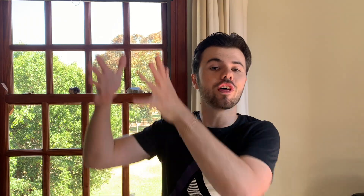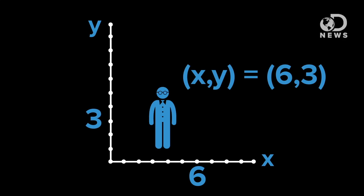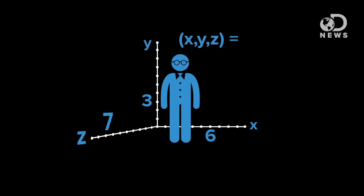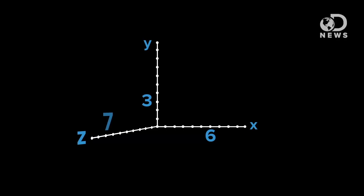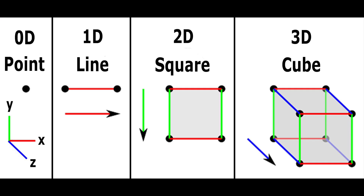Moving up to the third dimension, which is the dimension we all live in — the material world. We are able to move forward and back on the x axis, move up and down on the y axis, and move in a diagonal position, which is the z axis. Living on the third dimension, we can plot exactly where we are in space. So I could plot my position as six, three, seven, and you would know exactly where I am. However, these three dimensions are very simple. Now we're going to move on to the fourth dimension as well as the fifth, which does get kind of complicated.